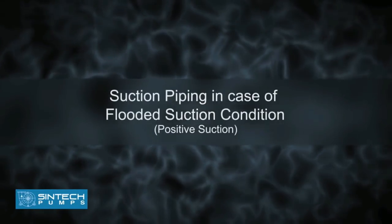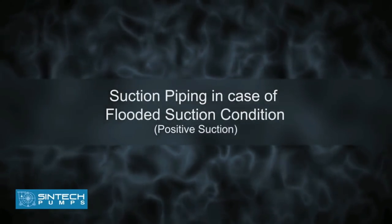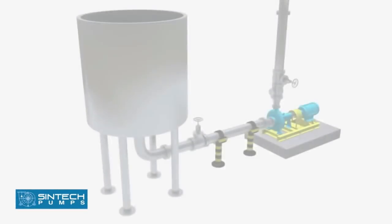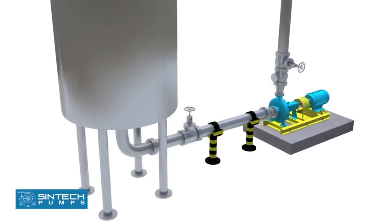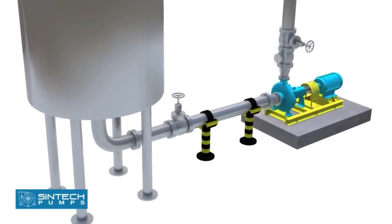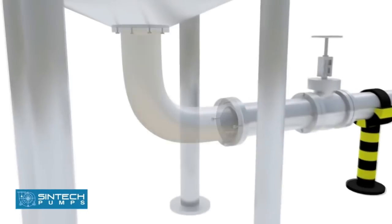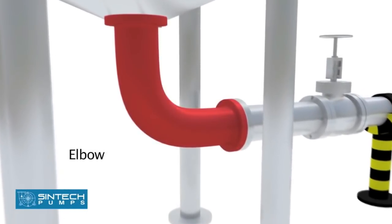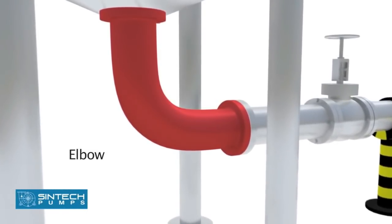Suction piping in case of flooded suction condition (positive suction): In case the water is being supplied to the suction through gravity, for example an overhead tank, a slightly different setup is needed. The elbow should be of standard type or of the long radius type.